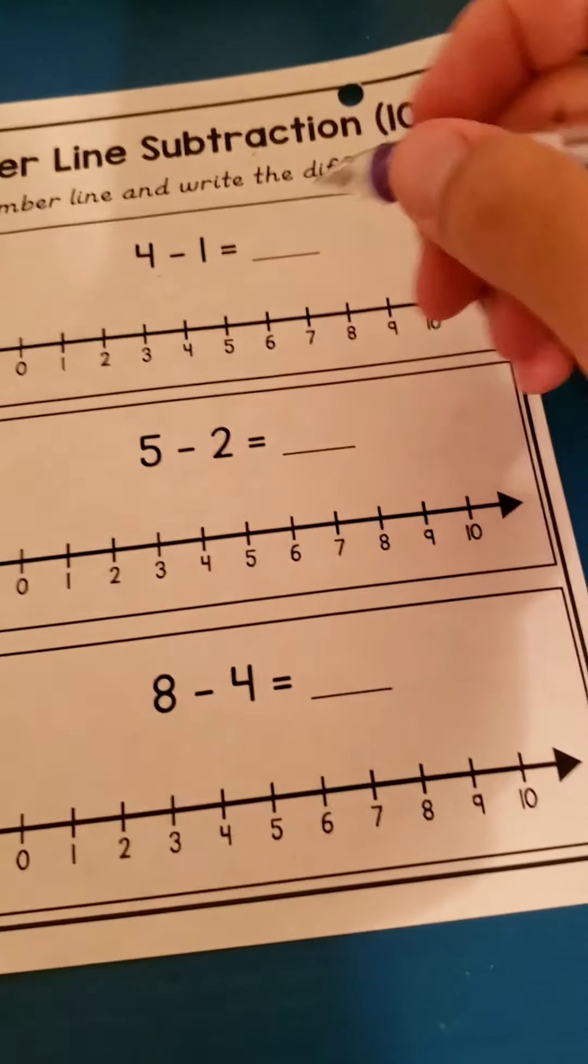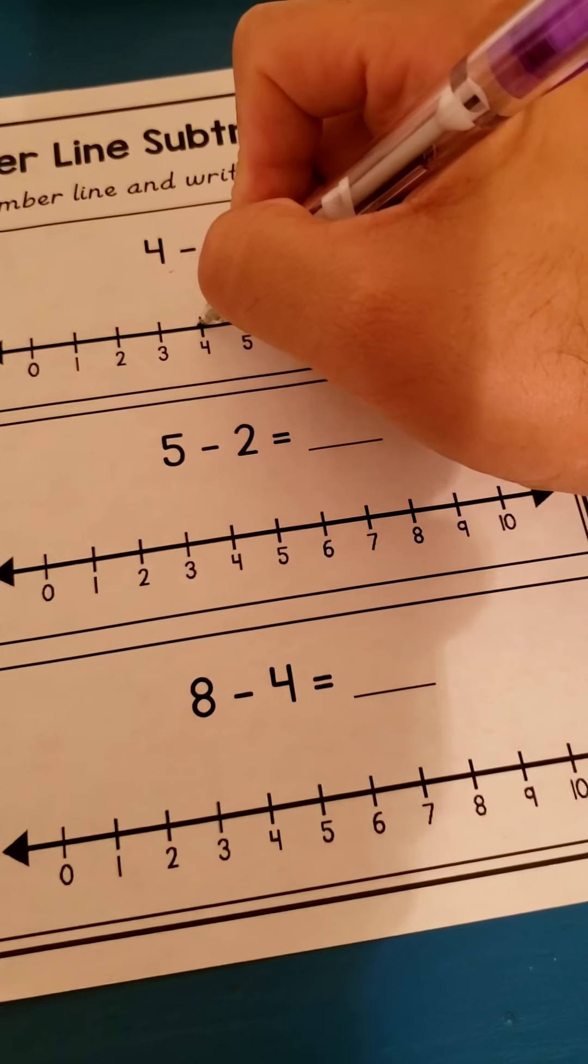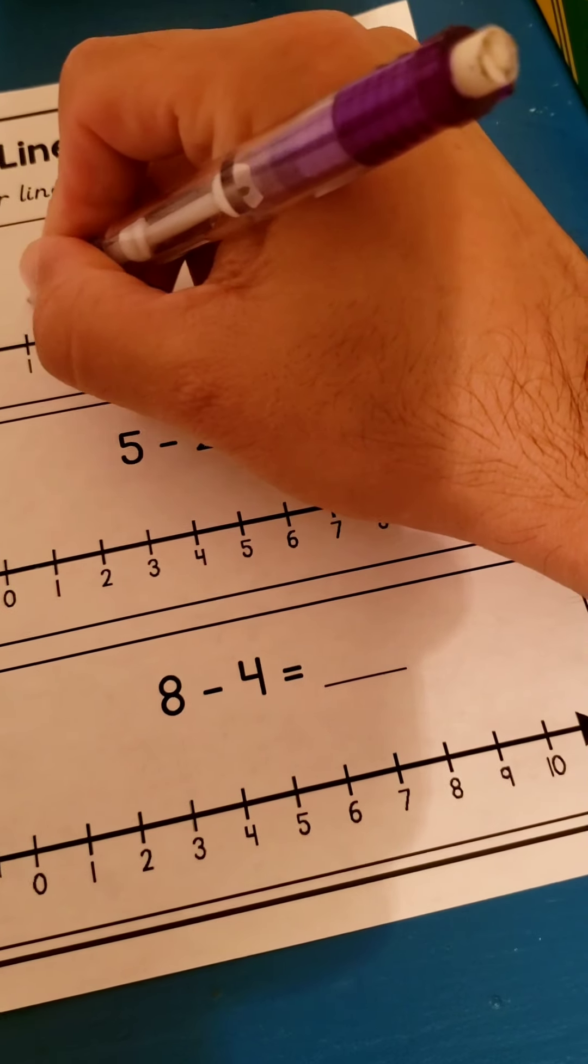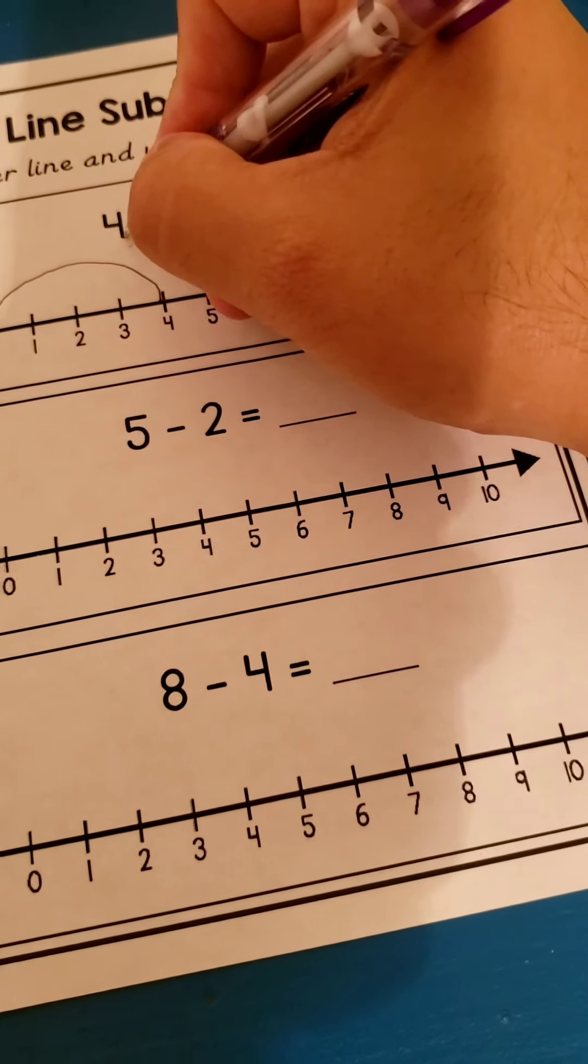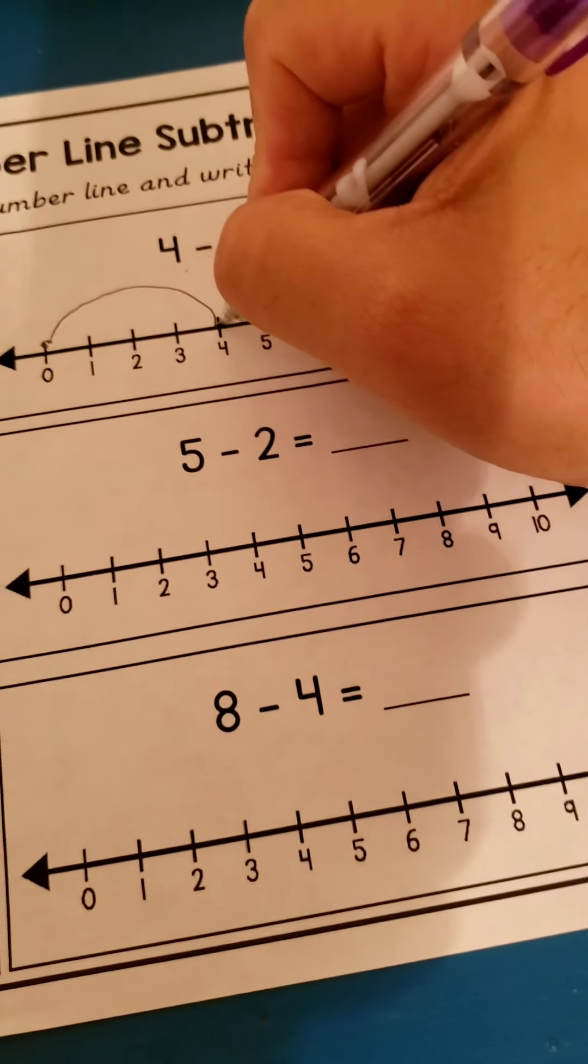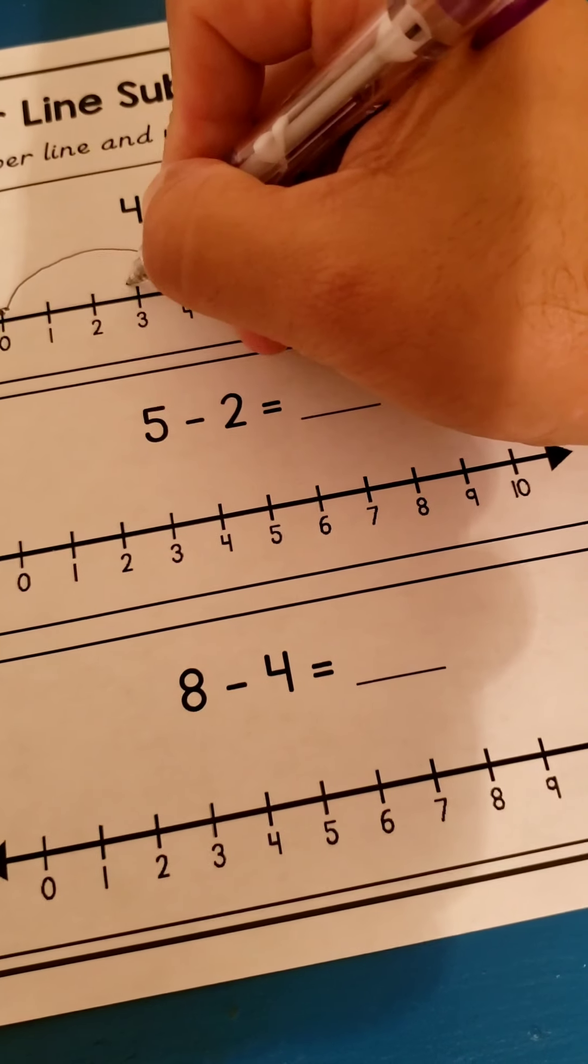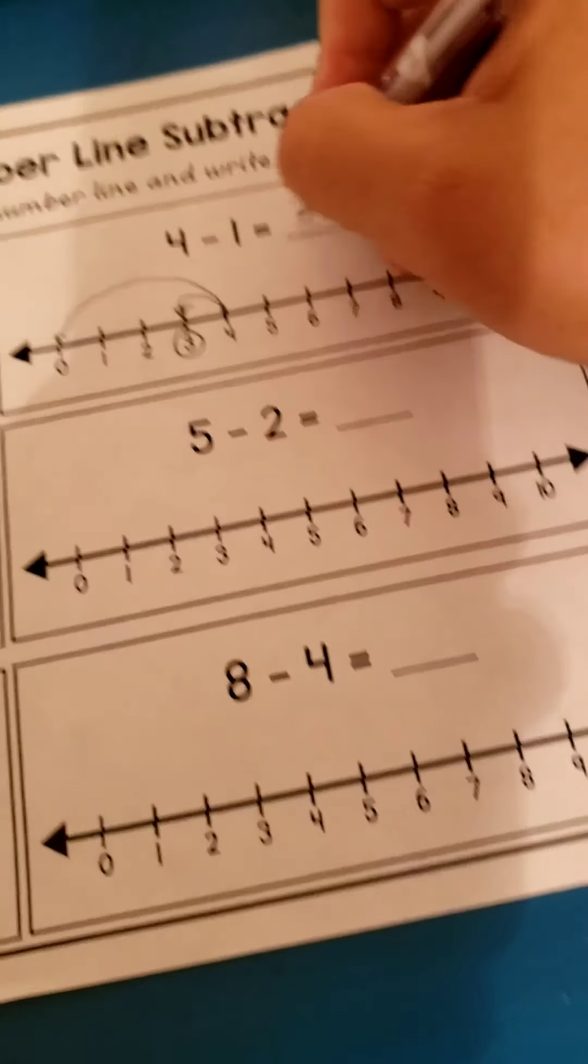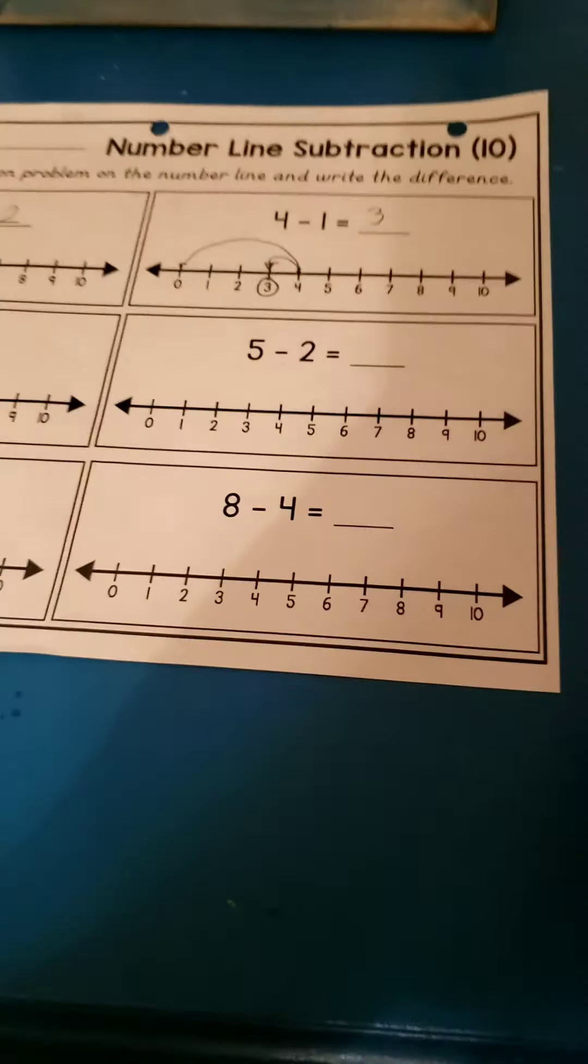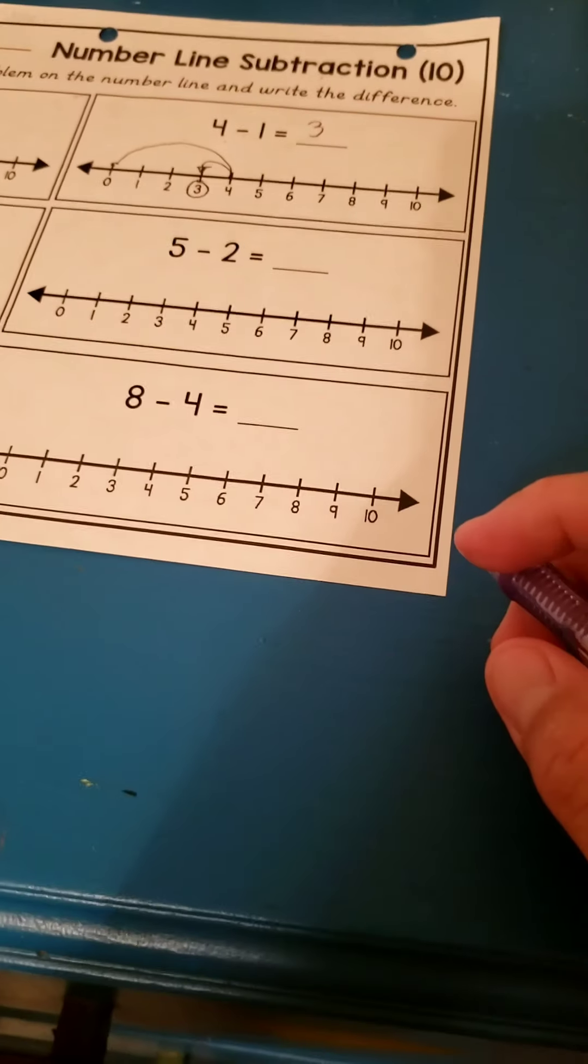I have four. Find four on the number line. Little dot. You're subtracting, so you have to go all the way to zero. Four minus one. So you have to go one left. What's your answer? Three. Okay. Finish the rest, guys. Please show your work.